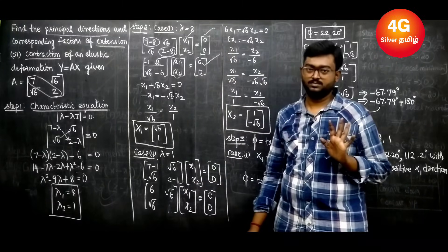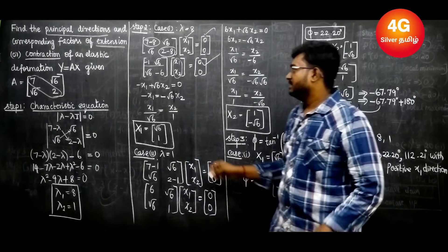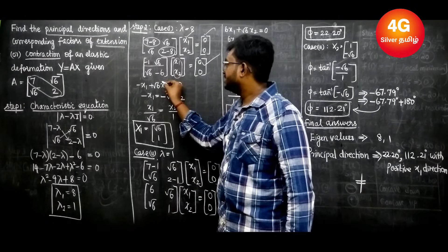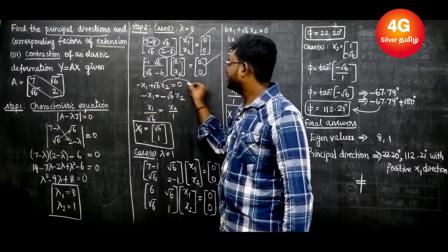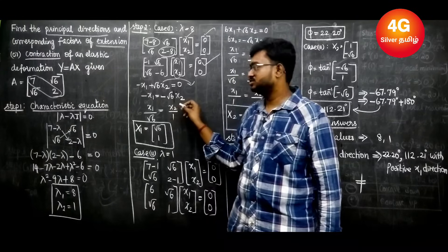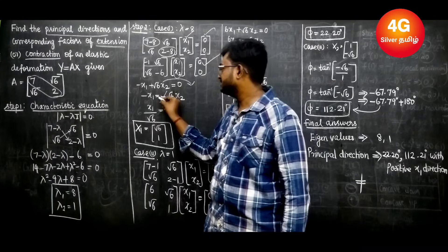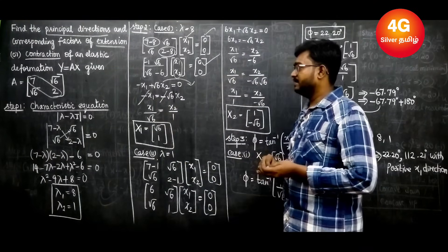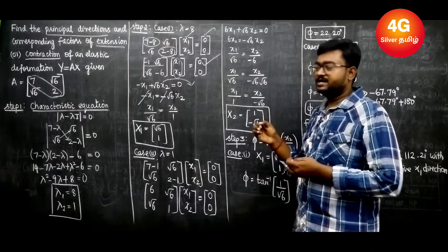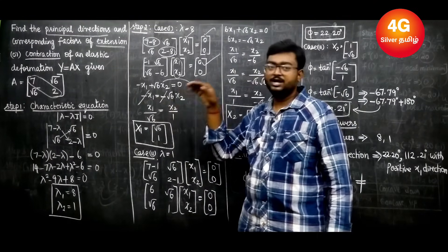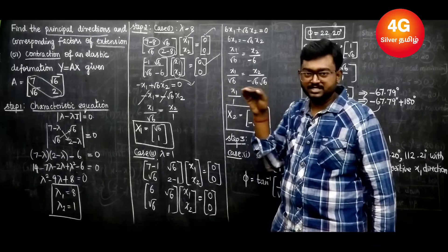Moving +√6·x2 to the other side: x1 = √6·x2. So the ratio x1/x2 = √6/1. Placing x1 and x2 in the numerator, the eigenvector for λ=8 is [√6, 1].